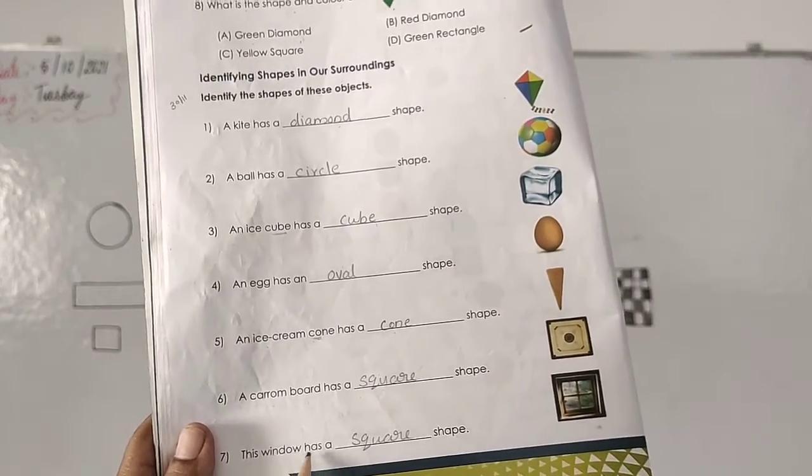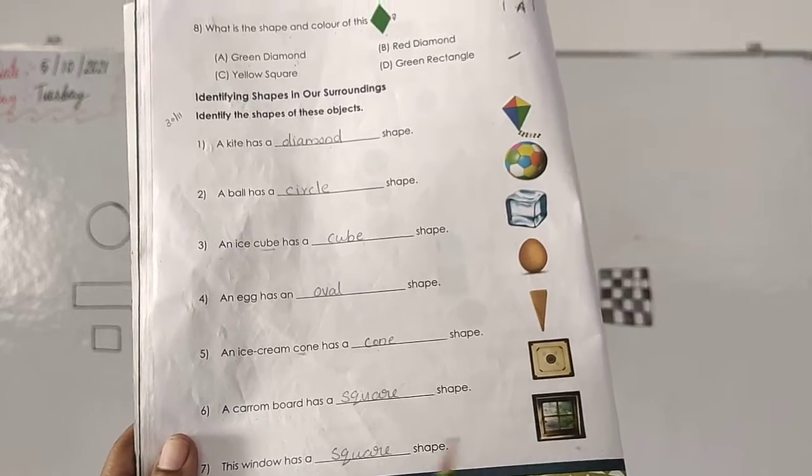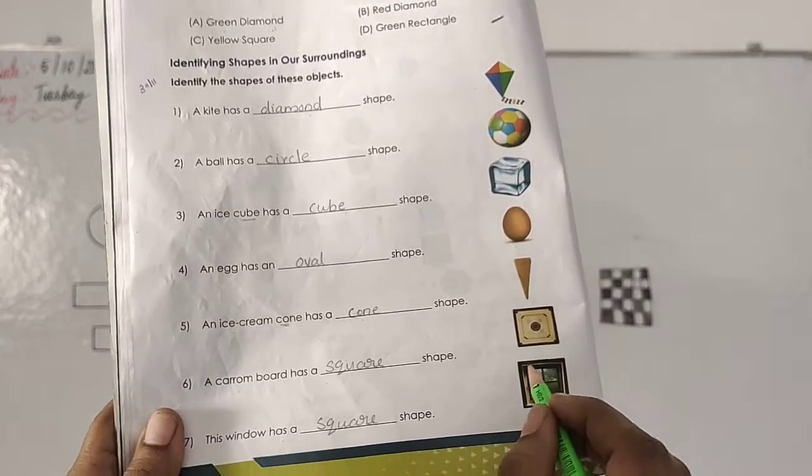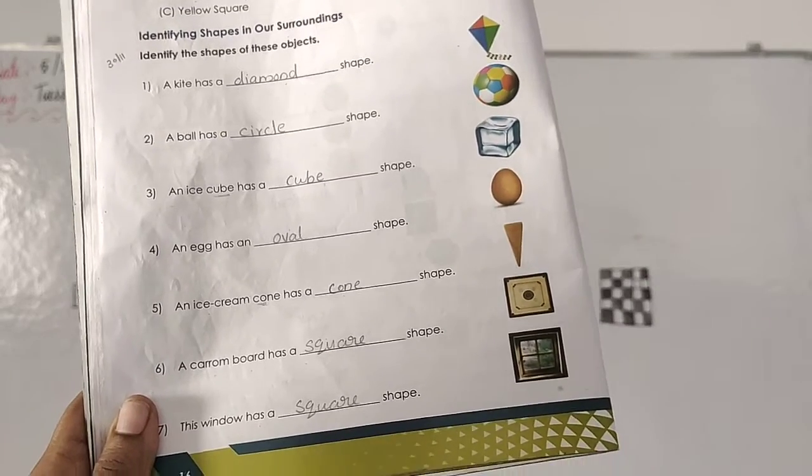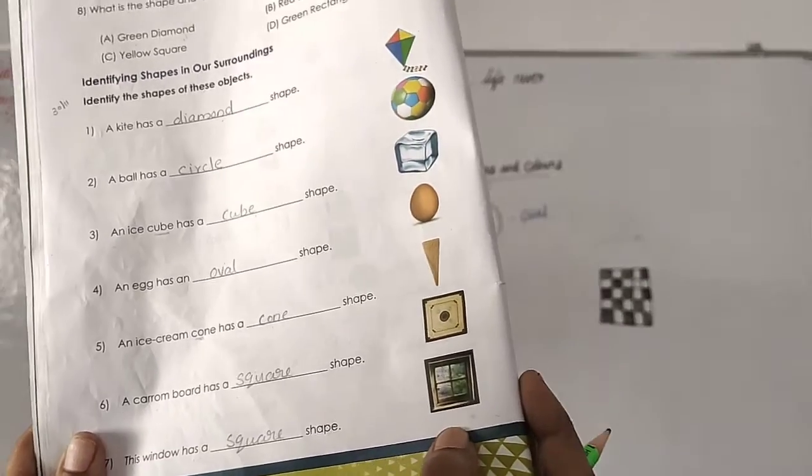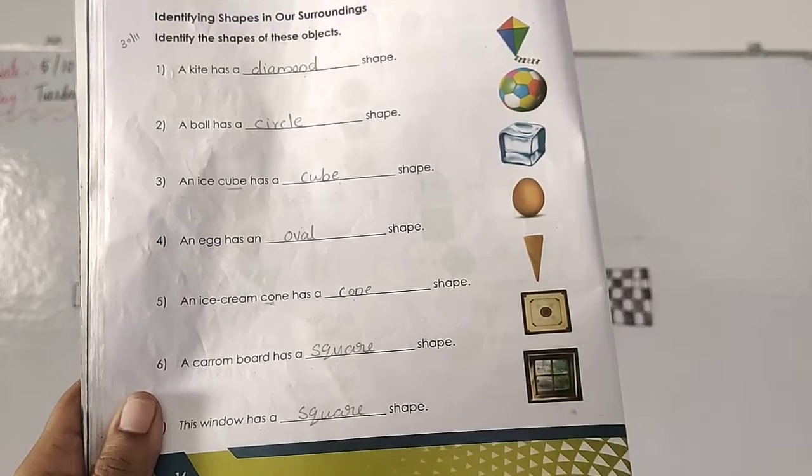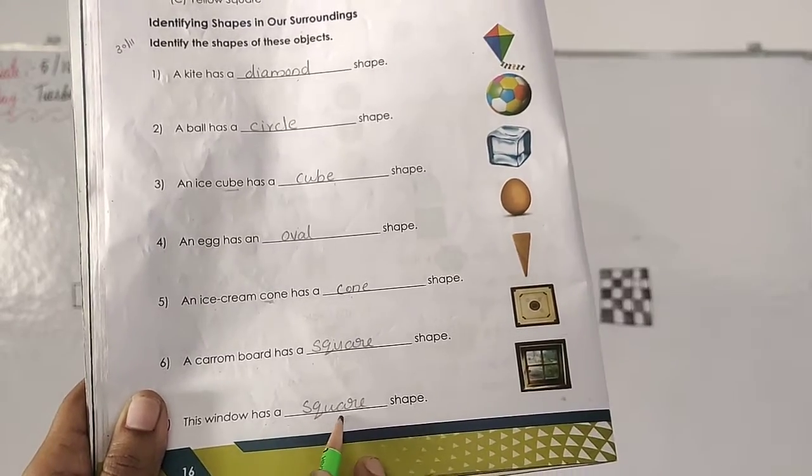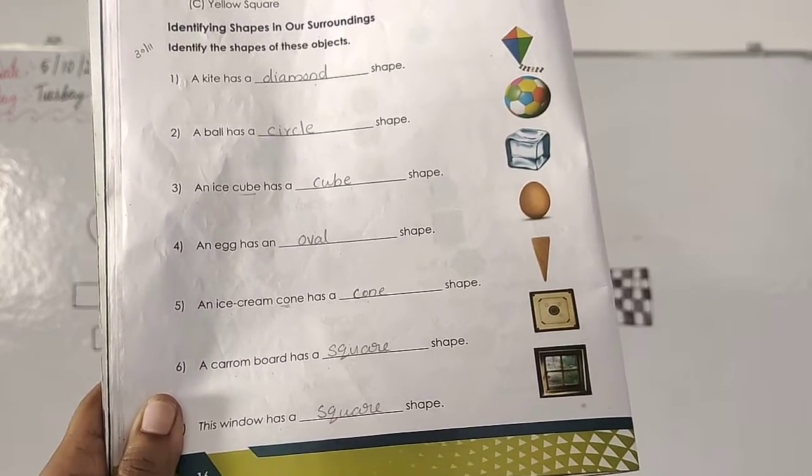Then this window has a dash shape. This window. This window you want to see. Which shape this is? Square shape. Yes. Not only a rectangle shape. Square shape. Then write down square. S-Q-U-A-R-E square.